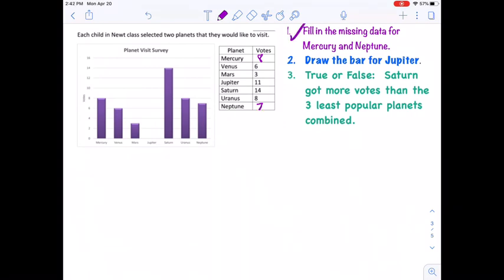Now we've done that one and we're asked to draw the bar for Jupiter. We can look at our table and see that we have 11 votes for Jupiter, but again, when I look at my scale over here, there's no 11. There's a 10 and there's a 12, so I know that my bar for Jupiter has to be between the 10 and the 12. It's not going to touch the 10 and it's not going to touch the 12. It's going to be between them.